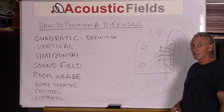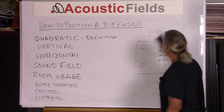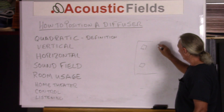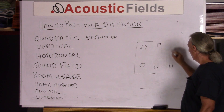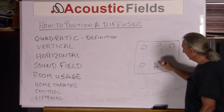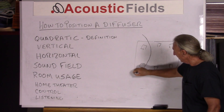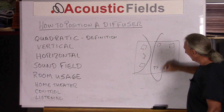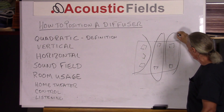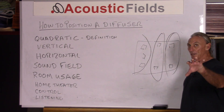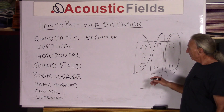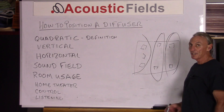A home theater room and listening room are a little bit different. With a home theater room, we have all these multiple sources — side channels, rear channels, and all kinds of sound fields generated by the front channels. We have sound field energy directed by the side channels and a whole series of energy directed by the rear channels. Each one of those sound fields has to have a particular technology employed to maximize those three sound fields.